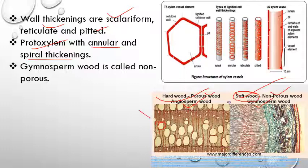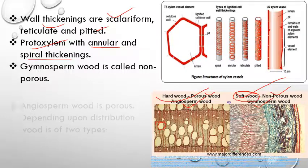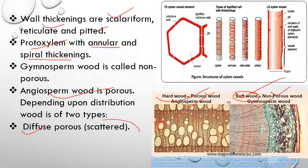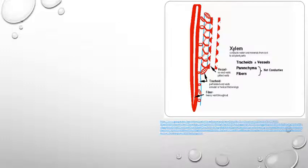Porous wood is of two types: diffuse porous and ring porous. In diffuse porous wood, vessels are unevenly and randomly distributed with no definite arrangement. In ring porous wood, vessels are arranged in the form of concentric rings. So angiosperm wood is porous wood, further classified as diffuse porous or ring porous based on vessel distribution.